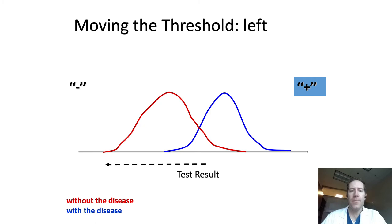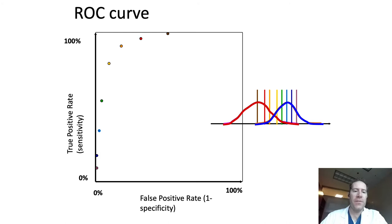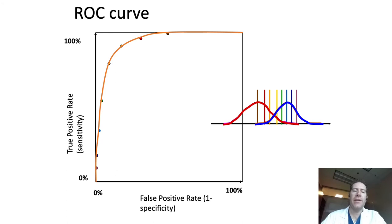An ROC curve is a graphical demonstration of sensitivity and specificity across the infinite spectrum of thresholds. Each line represents a chosen threshold, and on the ROC curve — ROC being the name of the curve itself — for each threshold, the true positive rate or sensitivity is placed on the y-axis and the false positive rate or one minus the specificity is placed on the x-axis, thereby plotting each of these points. A regression is then completed to show the curve, and the area under the curve is simply the computed area within this plot.